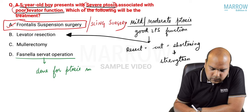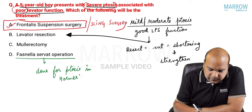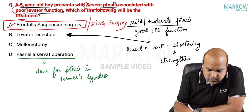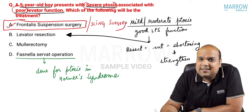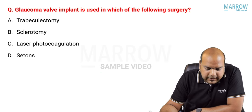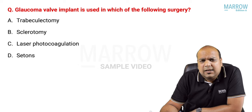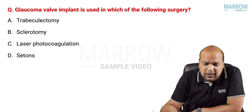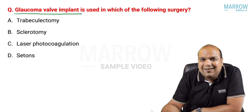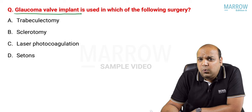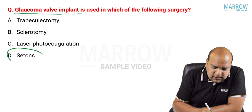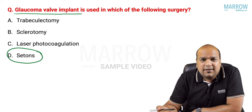Next: glaucoma valve implant is used in which surgery? When all other surgeries have failed, we put an implant in the anterior chamber for aqueous drainage. This is also known as seton surgery - an older name still found in many textbooks. Nowadays textbooks write glaucoma valve implant, but seton surgery refers to the same procedure.